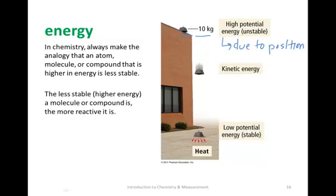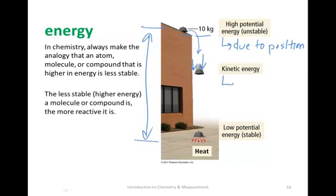This weight has potential energy because of its position relative to Earth — gravity provides it. If we push this weight off the edge of the building, the energy is not going to disappear; energy can only be transferred. This is the law of conservation of energy: that potential energy is transferred to the kinetic energy of the weight falling down the side of the building. Kinetic energy can roughly be described as energy due to motion, or energy in motion.